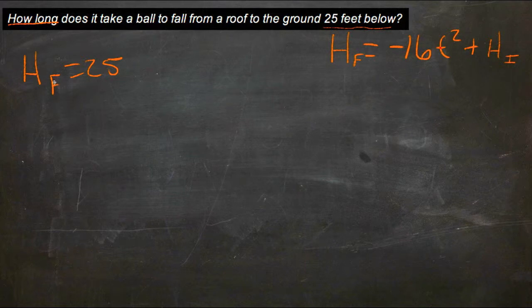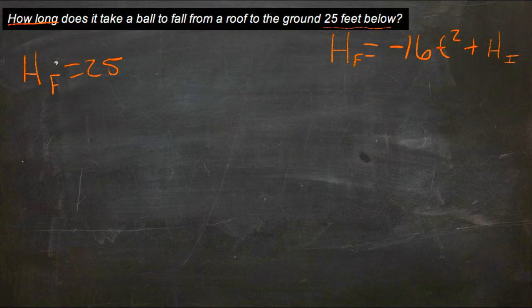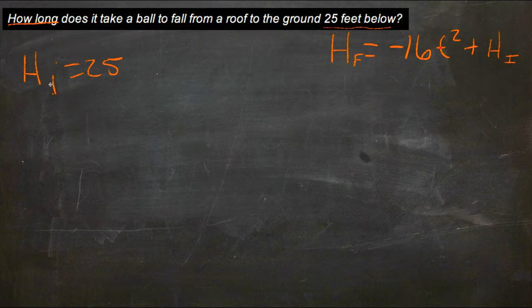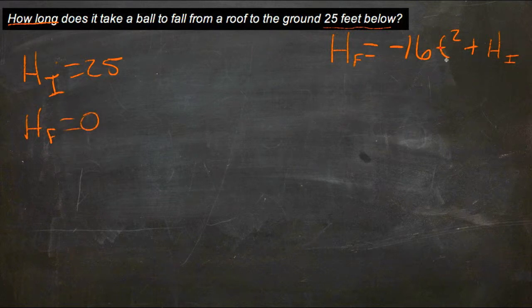So we're going to substitute that in height initial. You know what? I did that backwards. Height initial is 25 because that's the starting height that's falling. Initial height is 25, and final height is going to be 0 because that's when it hits the ground. So we have our starting and ending heights. What we're looking for is our time.